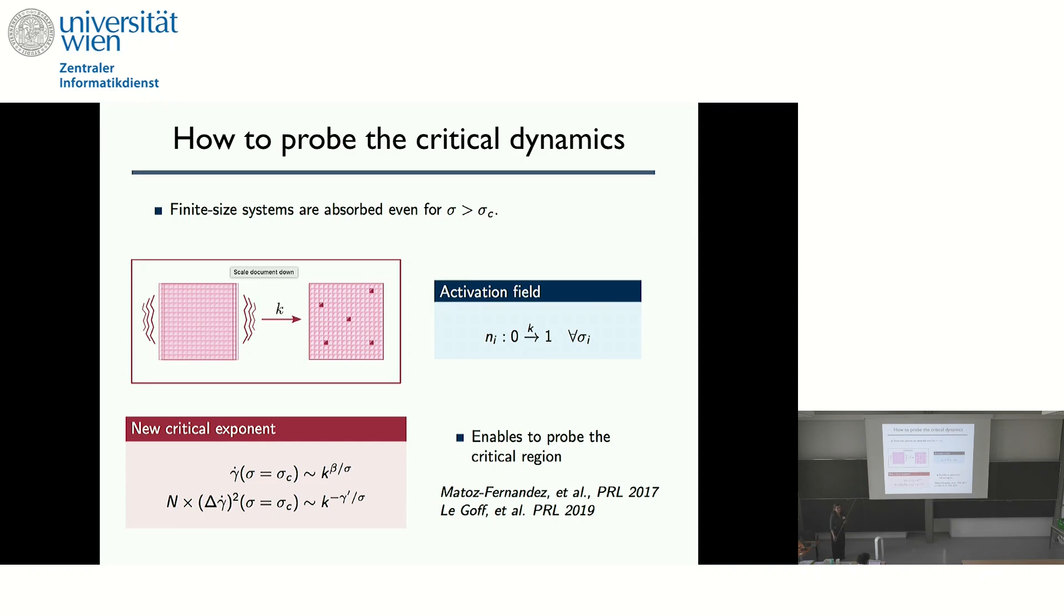And the problem with this is that in absorbing phase transition, you have, if you do this in a finite system, you have always the probability to get stuck, even when you're above sigma c. That's because of finite size effects. A random fluctuation brings you to a state where you have no activity, you get stuck. What you need to do is to find a way to keep things in the dynamics. And what we do is to introduce again an activity field, which is very similar to all of the other dynamics that I already showed before. And so then you will introduce also a new critical exponent, which is the exponent related to when k goes to zero.